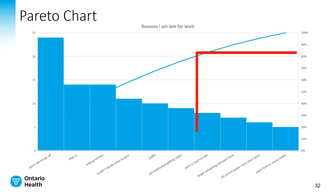You can then look at the chart and see where the greatest impact is coming from. You'll notice that on a Pareto chart there is a right-hand vertical axis, which you may not be used to seeing. That right-hand vertical axis looks at cumulative frequency, and what we're interested in is where it hits 80%. I've drawn a red line on this Pareto chart so you can see that everything to the left of the red line — alarm did not go off, slept in, making lunches, couldn't decide what to wear, traffic, and sidetracked — are contributing the most to my problem of being late for work. That may be where I want to focus my initial QI efforts. The items to the right of the red line will have lesser impact, so I may want to prioritize and attempt those QI projects a little bit later on.